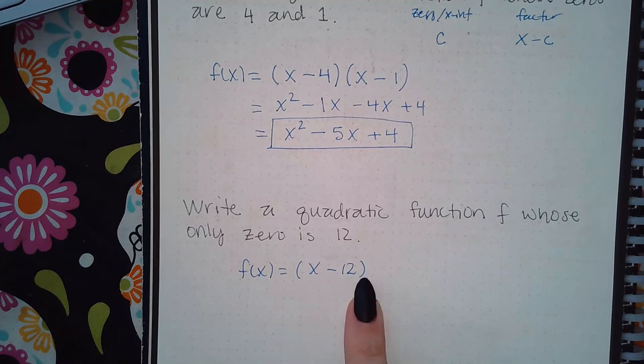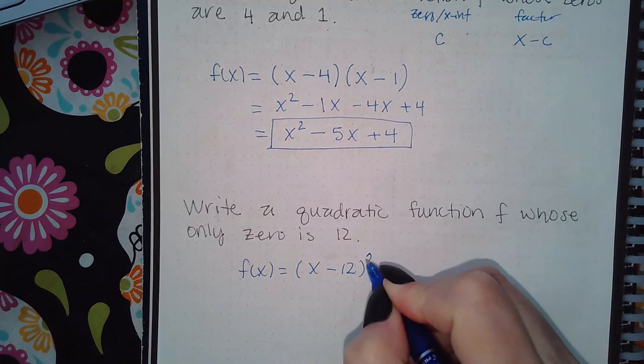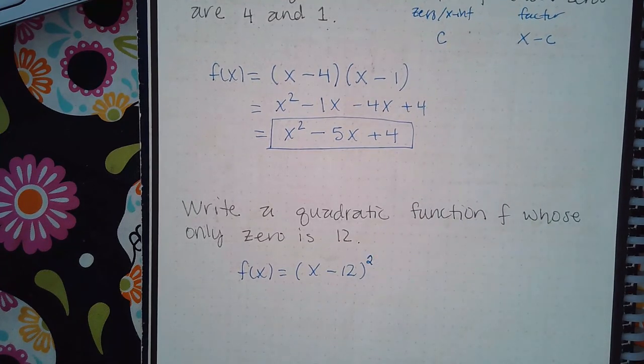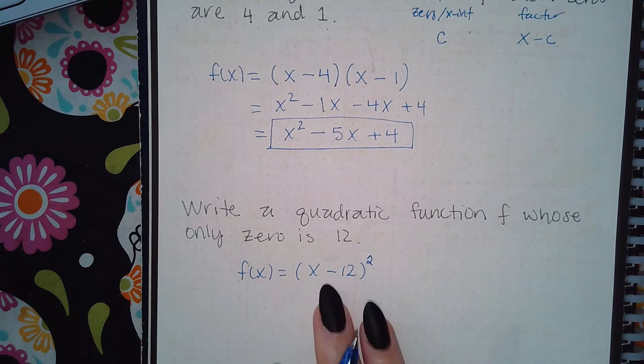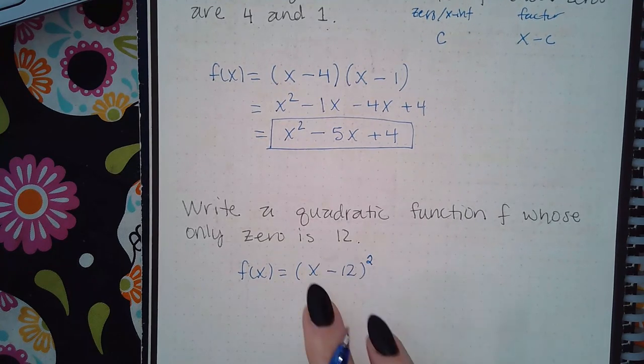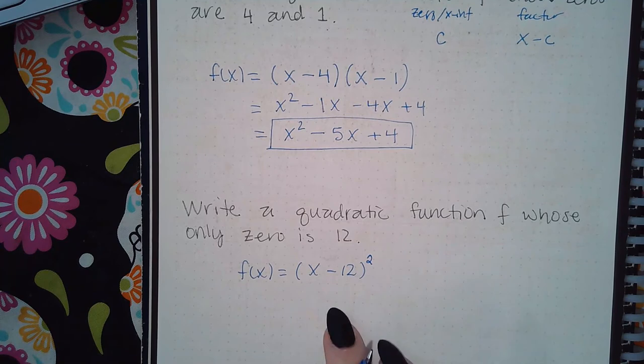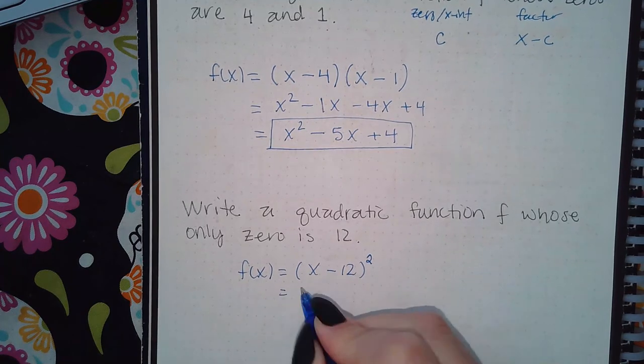I'm going to have to place a square there, which still keeps it consistent as the only zero is going to come from this factor. But now because of that square, I can FOIL this out.